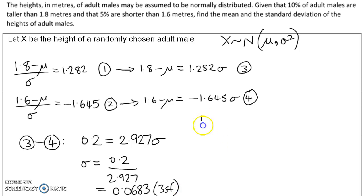I'm going to store that number on the calculator and use it to find mu. Going back to equation 3, I'm going to rearrange it so mu equals 1.8 take away 1.282 times sigma. Using the value stored in my calculator, I get 1.71 to 3 significant figures. So there's the mean and the standard deviation.